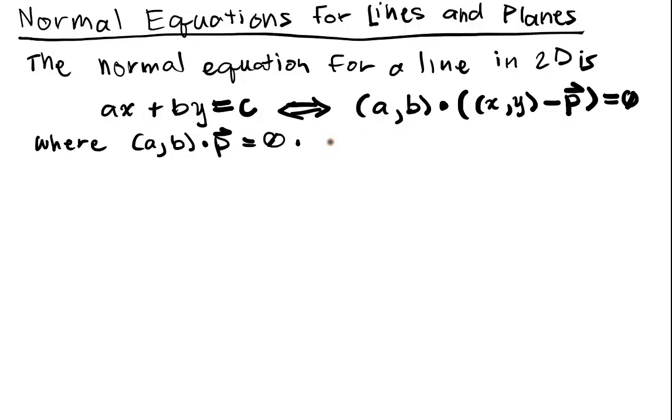So where (a, b) dotted with p equals 0. And so another way to write this, we'll set this equal to the normal n, and this equal to an x vector. So we really write this as n dotted with (x - p) and set that equal to 0. And that's the normal equation for this line.